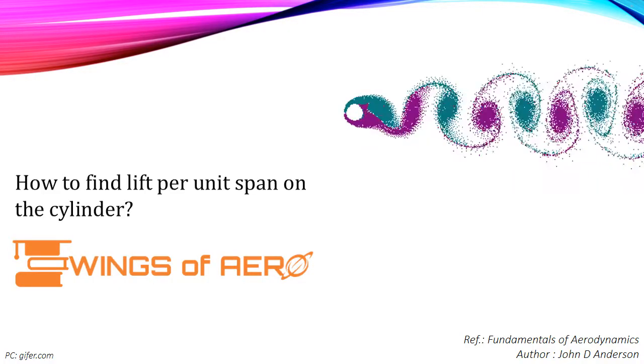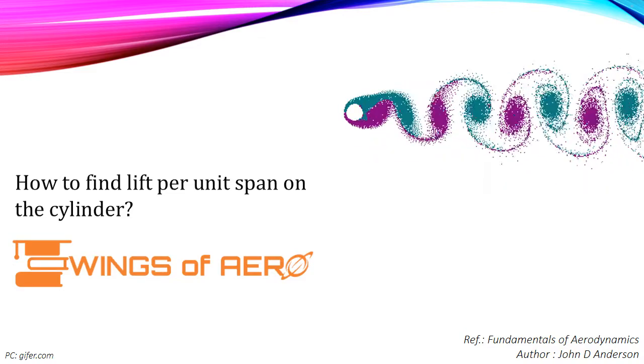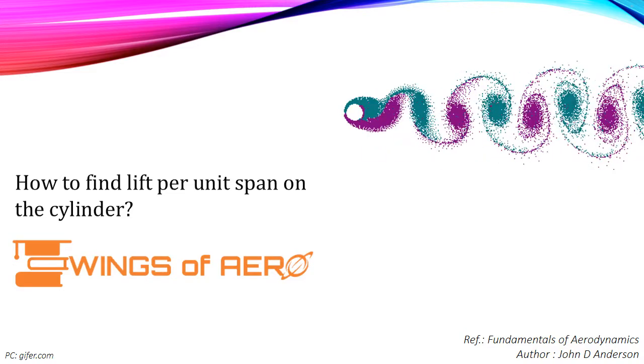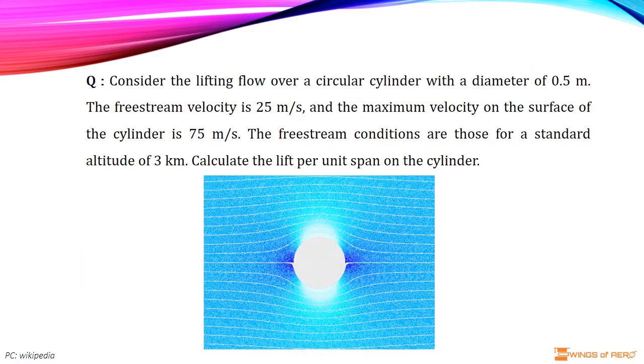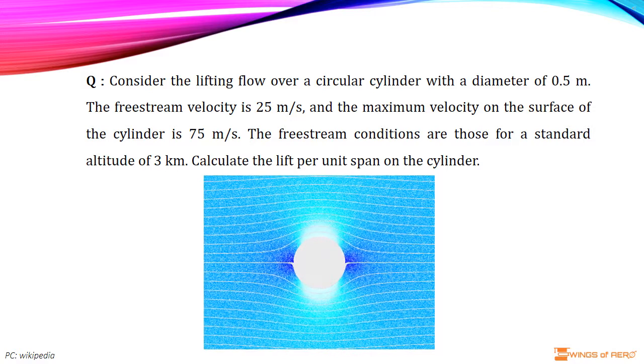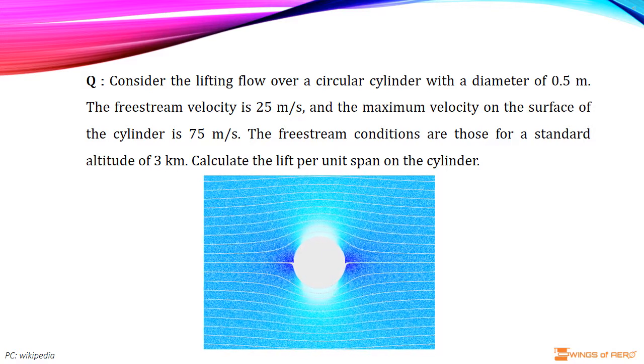Now, we are going to learn about how to find the lift per unit span on the circular cylinder. Consider the lifting flow over a circular cylinder with a diameter of 0.5 meter.